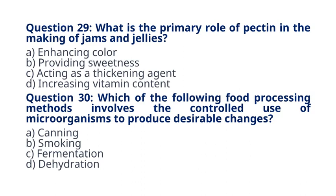Question 30. Which of the following food processing methods involves the controlled use of microorganisms to produce desirable changes? A. Canning. B. Smoking. C. Fermentation. D. Dehydration. The correct answer to question 30 is option C. Fermentation. Explanation. Fermentation is a process in which microorganisms, such as bacteria and yeast, are used to produce desirable changes in food, such as the production of yogurt or sauerkraut.